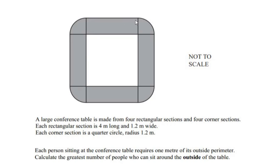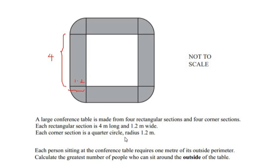We can see there are four rectangular sections and four corner sections on this conference table. Each rectangular section is 4 meters long and 1.2 meters wide, so the length of this rectangle is 4 and the width is 1.2 meters.